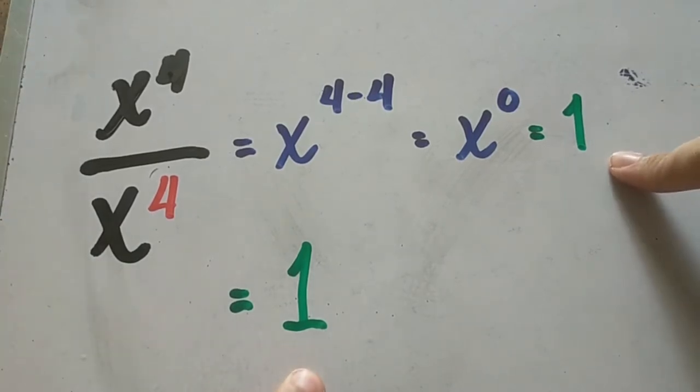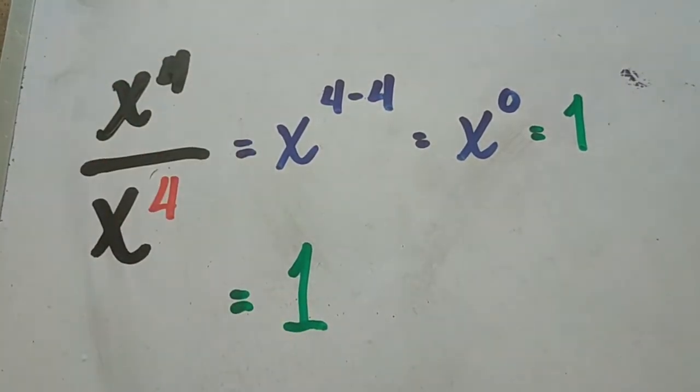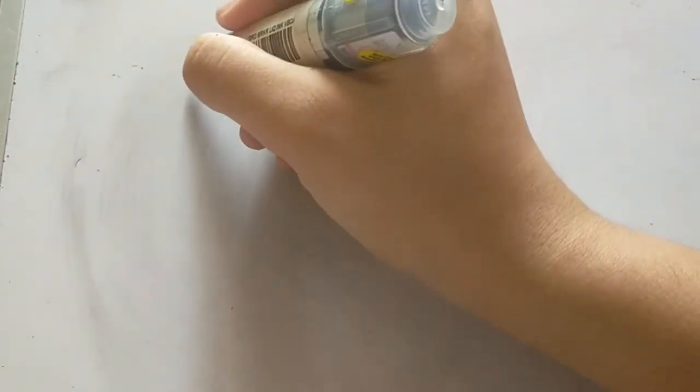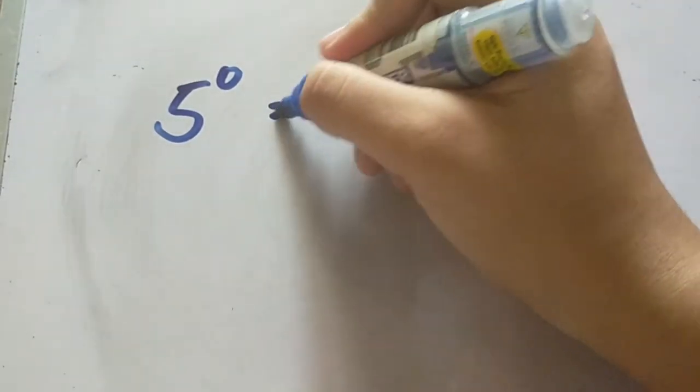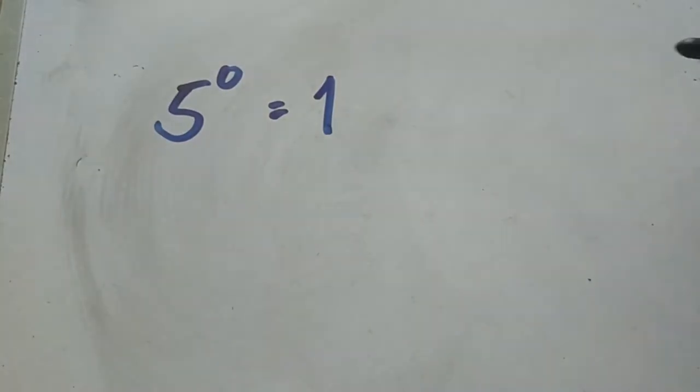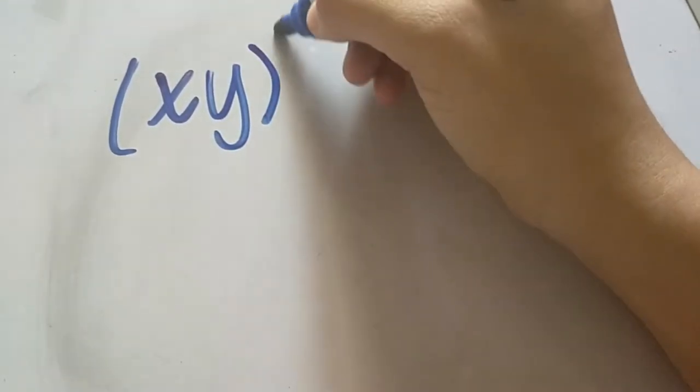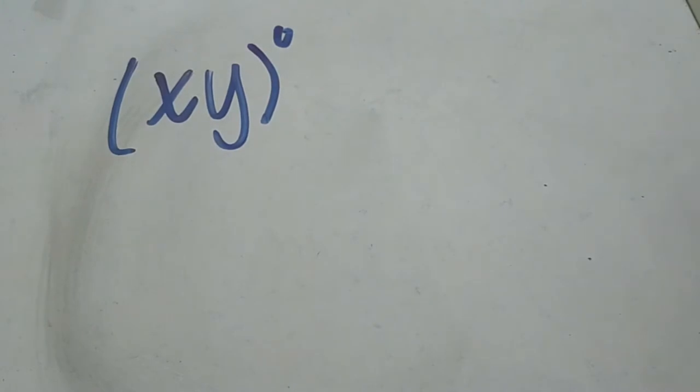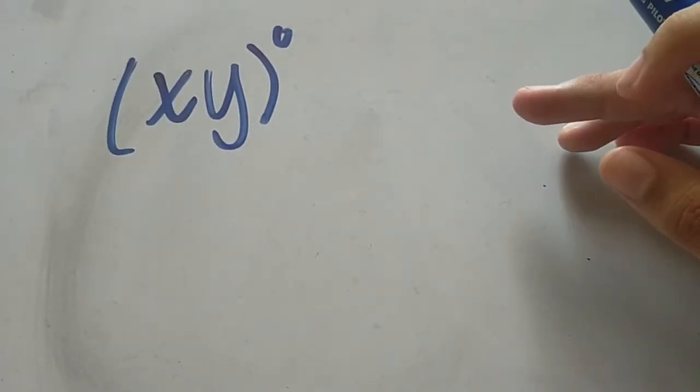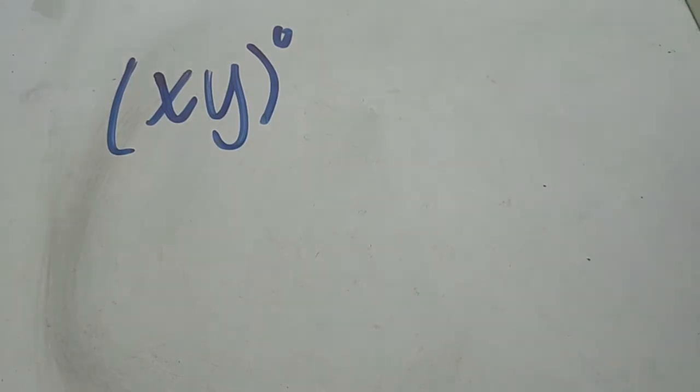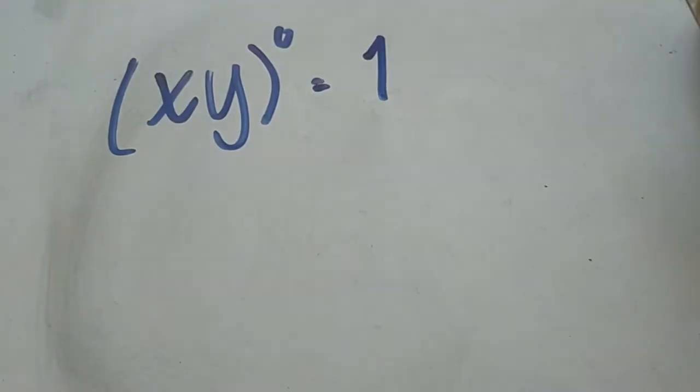Okay, let's have an example. For example, we are going to simplify 5 raised to 0. The answer is 1. Moving on, let's have another example. Let's have xy and they are all raised to 0. We can apply power of a product here, but instead of applying that, since this full expression is raised to 0, we can simply just say it is equal to 1.